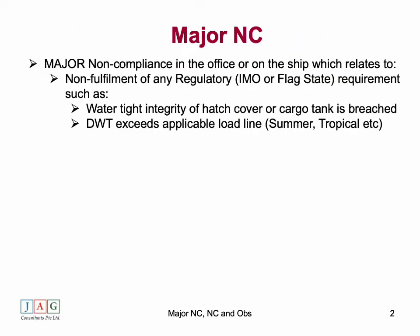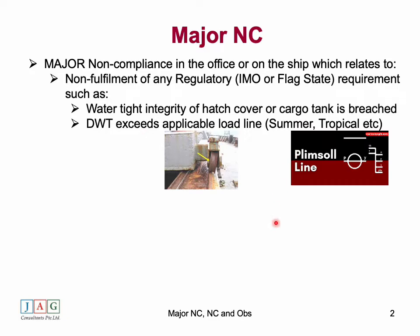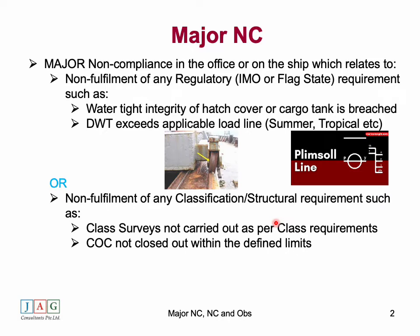So let's look at what is the major non-conformity. A major non-conformity is like saying the vessel is unseaworthy — cannot proceed to sea. For example, a ship where the watertight integrity has been breached, or the vessel has exceeded the summer load line. That's a clear-cut major non-conformity. The vessel cannot proceed to sea; it will be detained by port state control, and they call it a detainable deficiency.